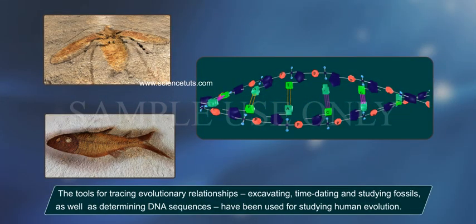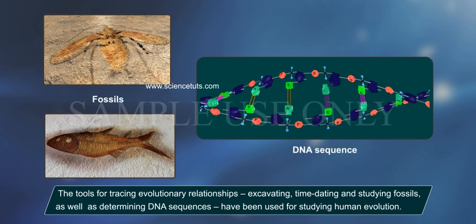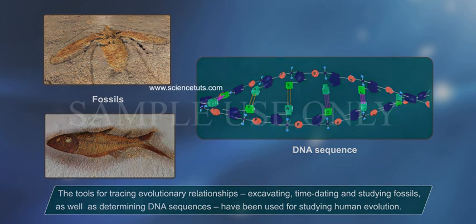The tools for tracing evolutionary relationships — excavating, time dating, and studying fossils, as well as determining DNA sequences — have been used for studying human evolution.